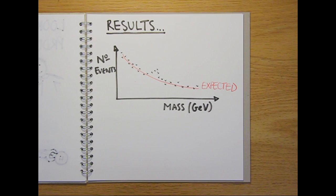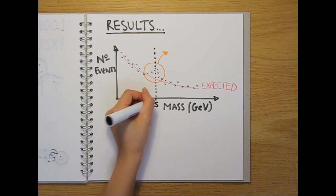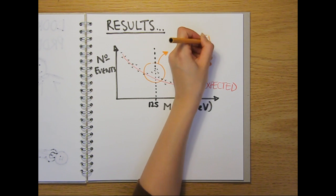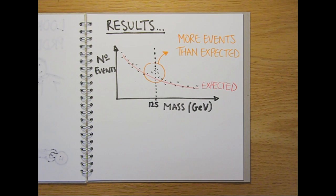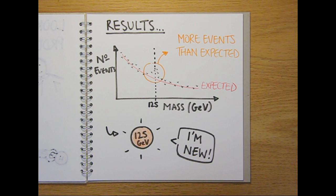The results announced in 2012 by CERN showed a statistically significant increase in events around a particular mass of between 125 and 126 gigaelectron volts. That's about equivalent to 2.3 times 10 to the minus 25 kilograms. This points towards the presence of a new type of fundamental particle with this mass.